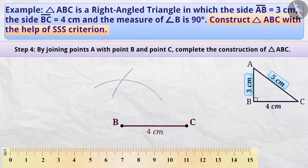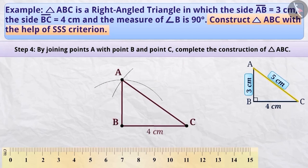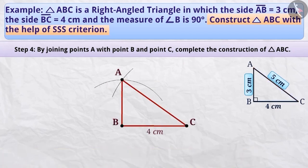Step 4: Both the arcs intersect each other at a point. This is the point A. Therefore, we will mark A at that point. Now we will join point A and point B — this is the side AB of triangle ABC. We will also join point A and point C — this is the side AC of triangle ABC. This is triangle ABC, which is a right-angled triangle in which the length of side AB is 3 cm, side BC is 4 cm, and side CA is 5 cm.